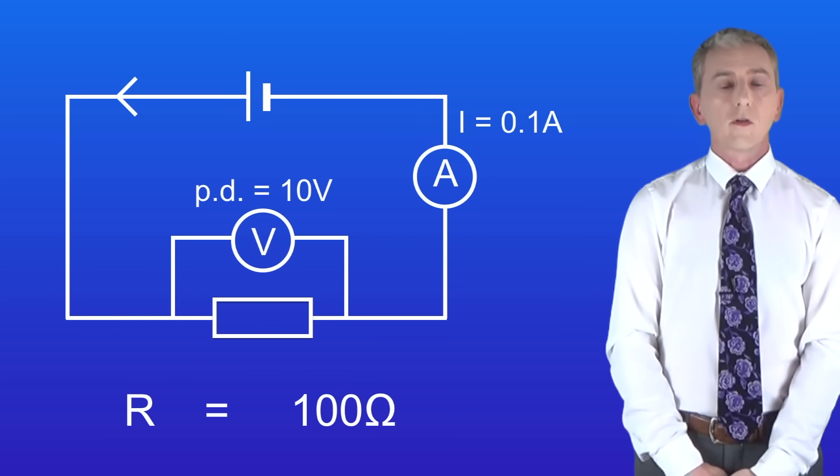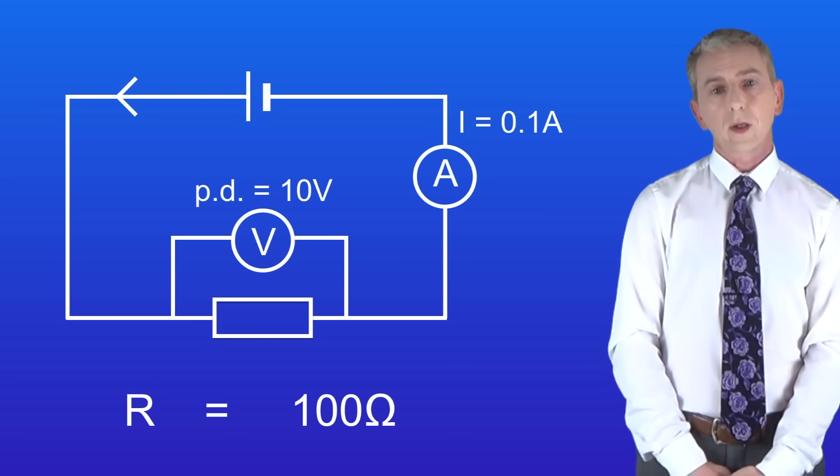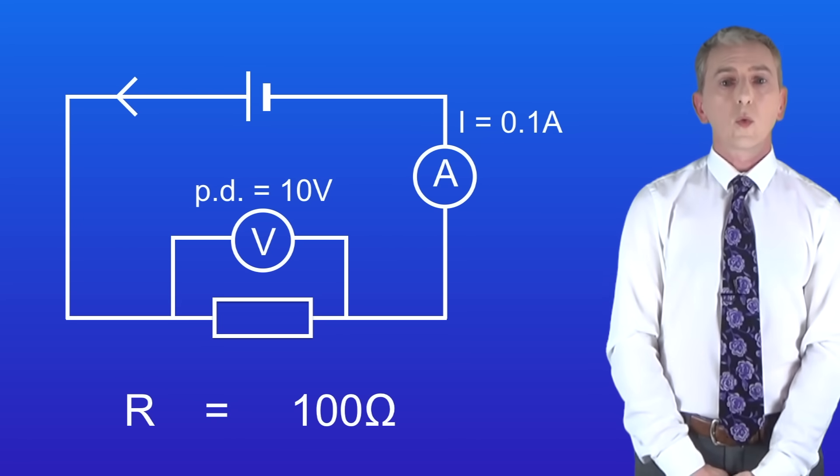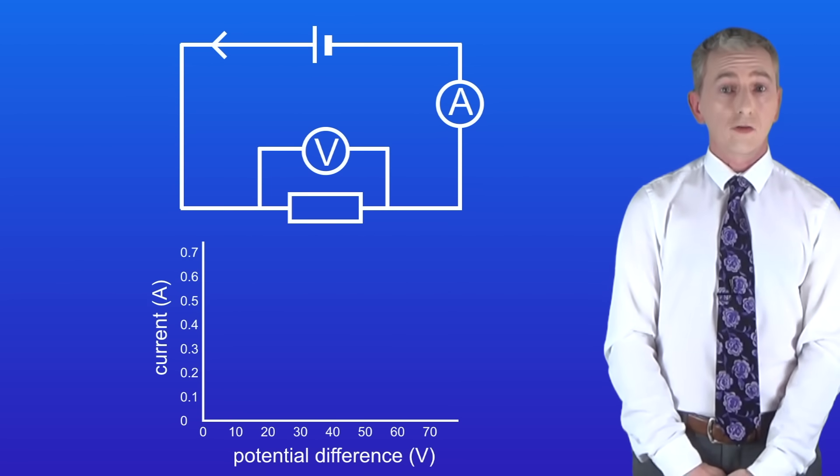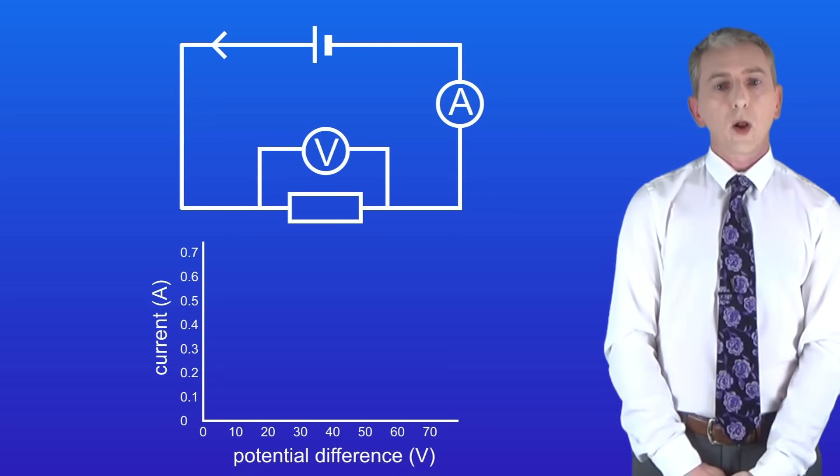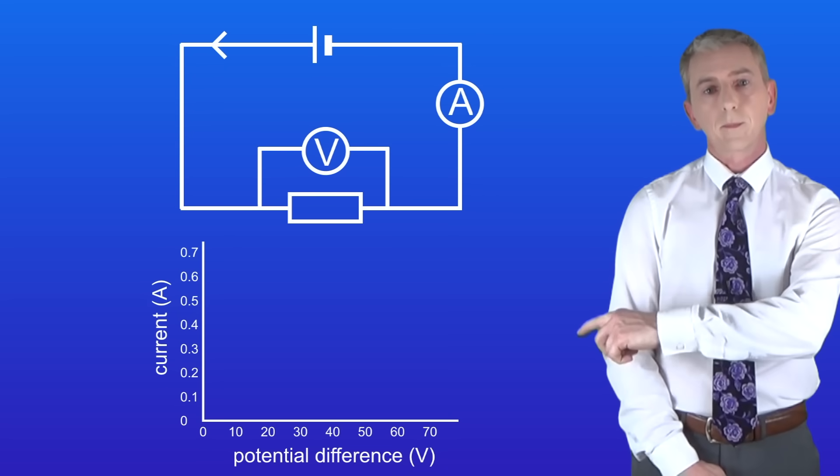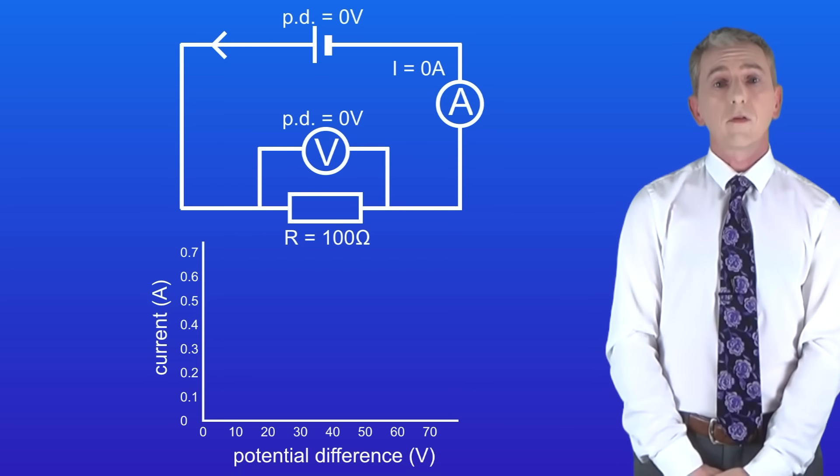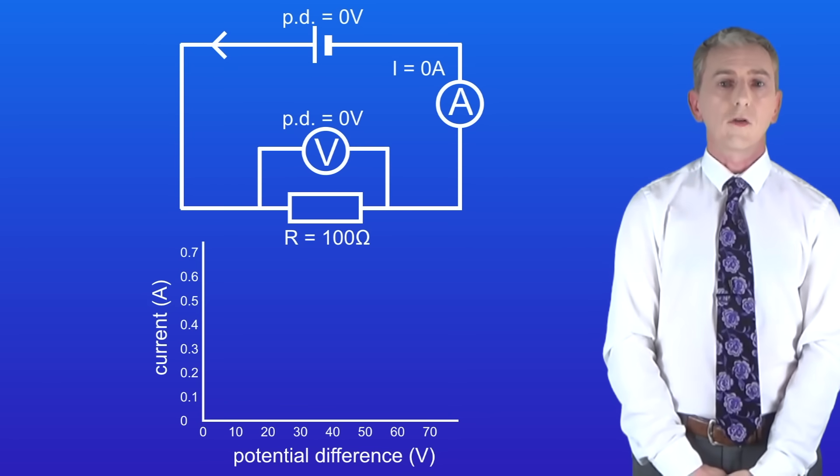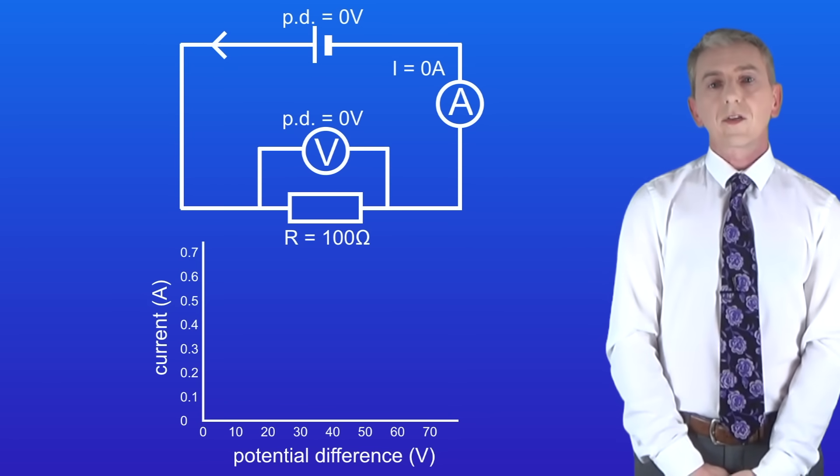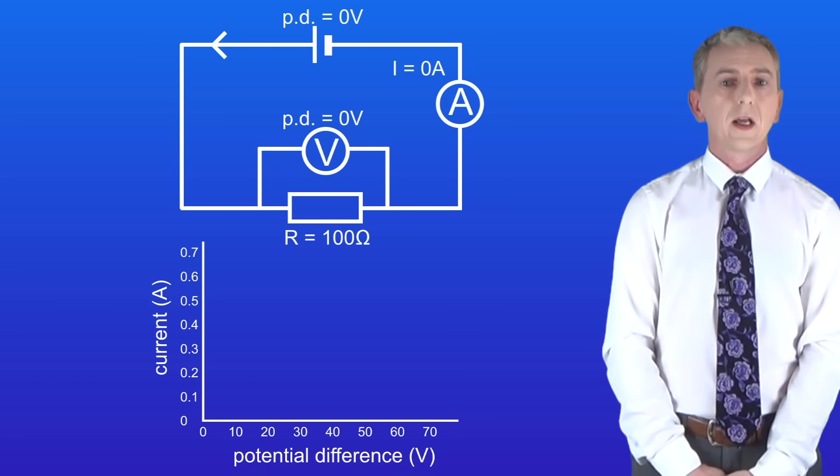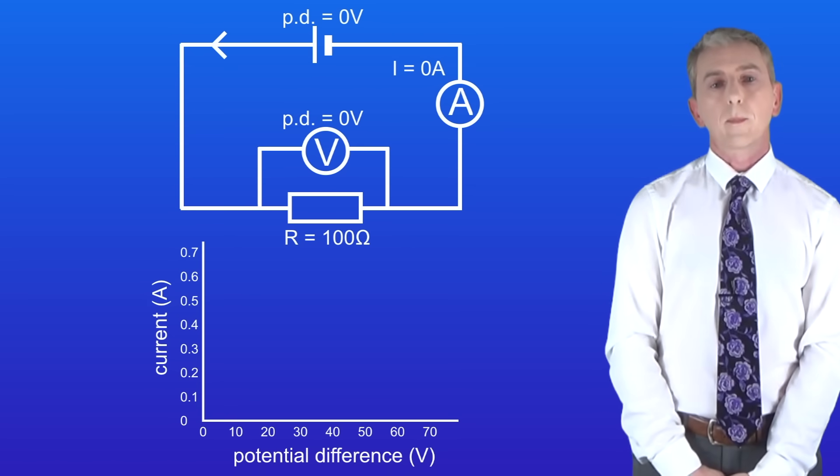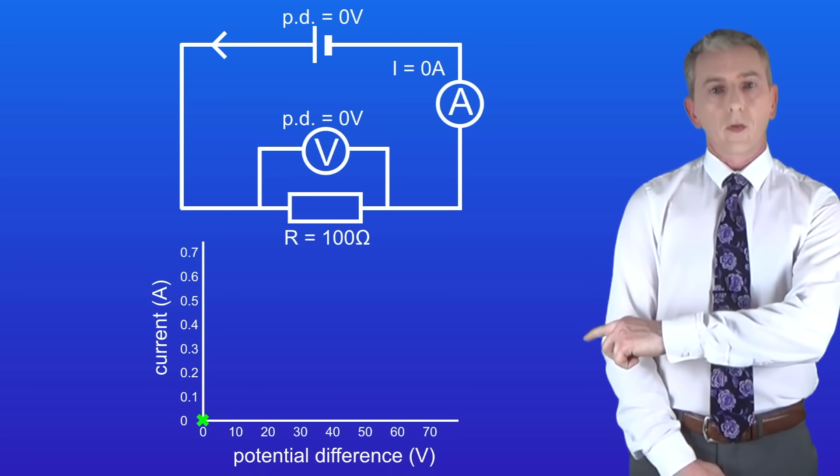So what would happen to the current flowing through the resistor if we increase the potential difference? We're going to look at that now. I'm going to increase the potential difference across the resistor and measure the current flowing, and I'm going to plot my results on the graph here. So a potential difference of 0 volts gives us a current of 0 amperes. That makes sense because if the potential difference is 0 then the electrons have got no energy so they cannot move through the resistor. Here's that result on the graph.